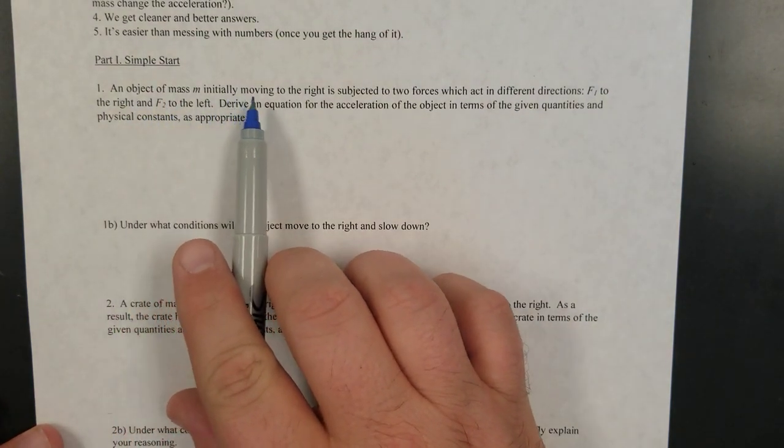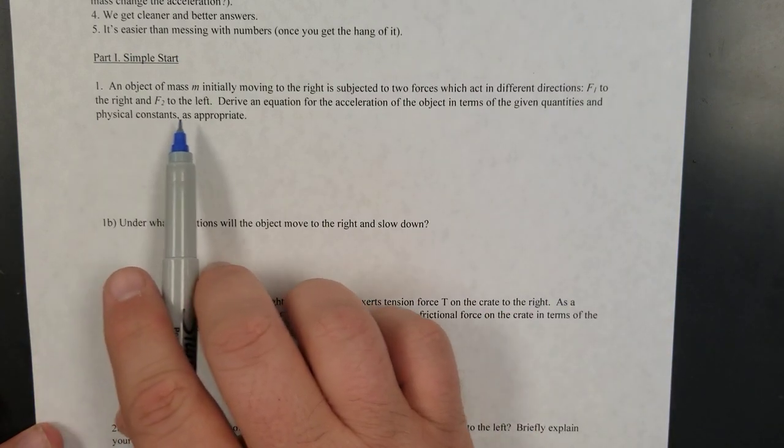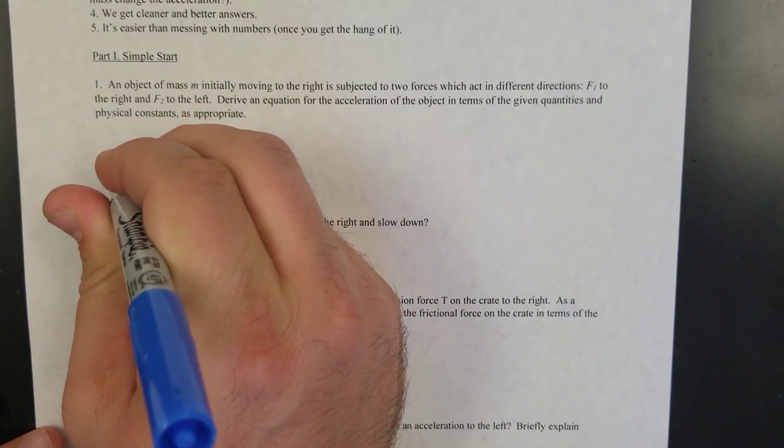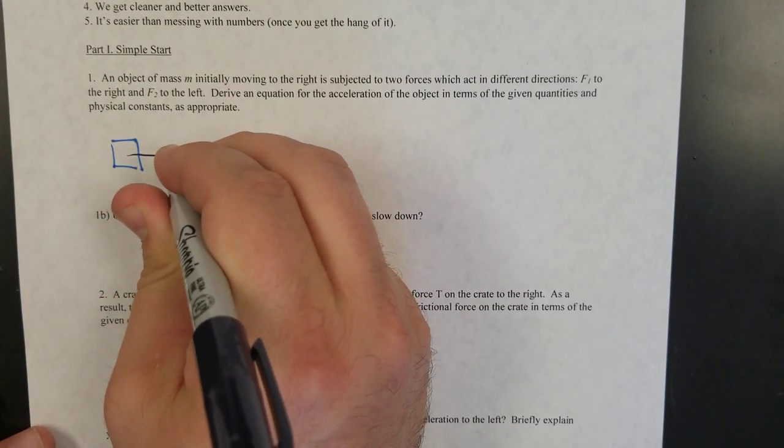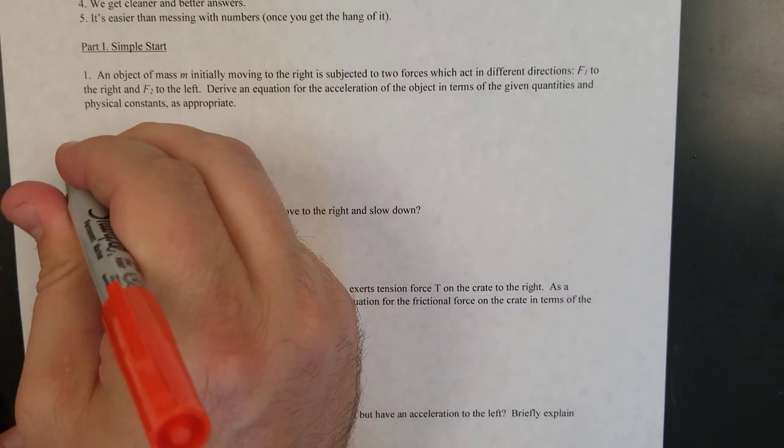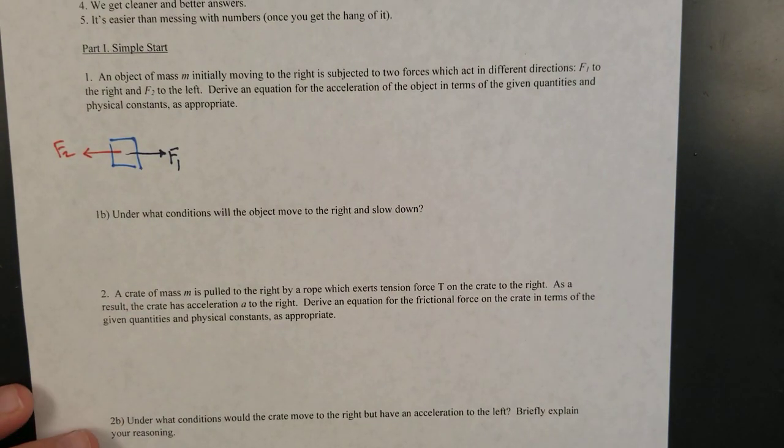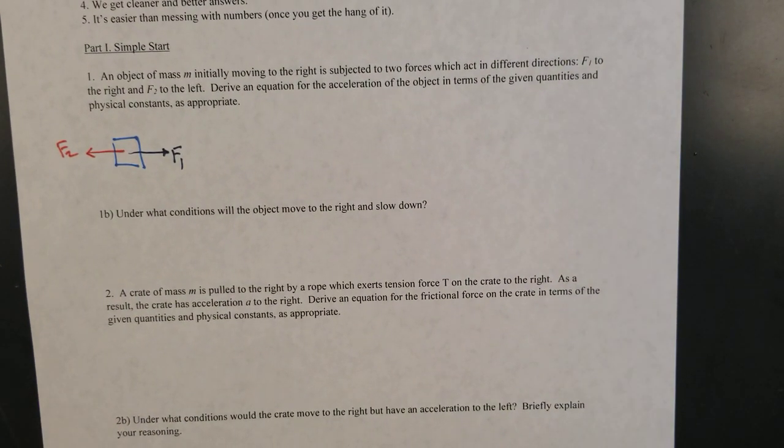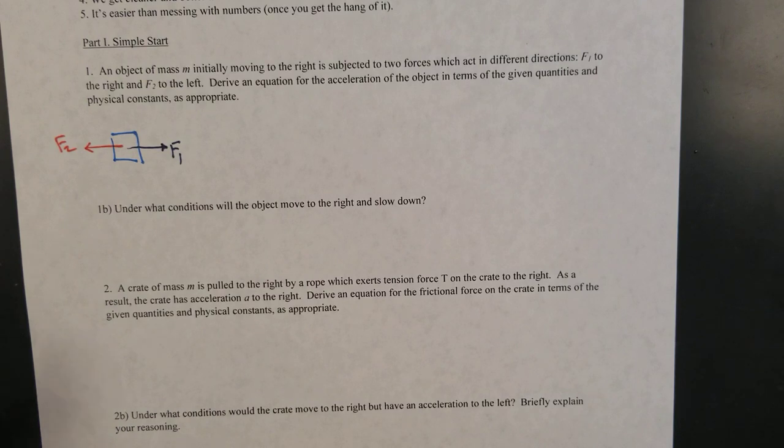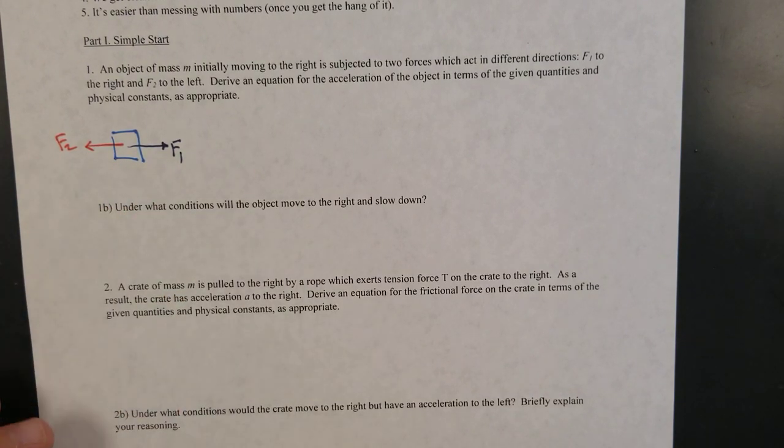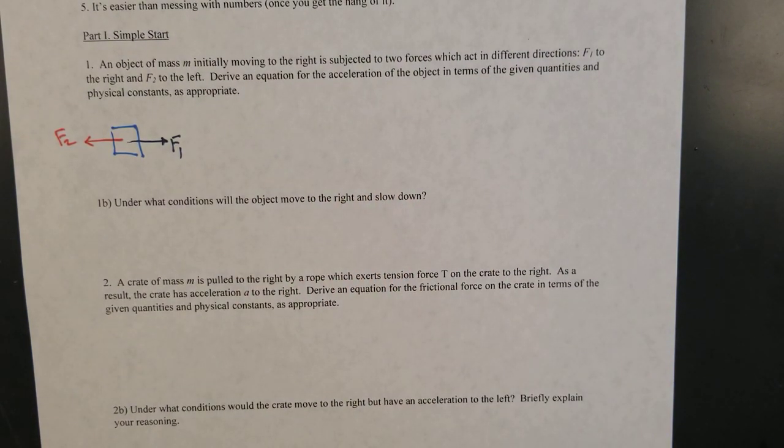In this example, we've got an object of mass m moving to the right, subjected to two forces which act in different directions, F1 to the right and F2 to the left. So real simple free body diagram. Here's my object. Here is F1. And then here is F2. Now, I don't know anything about how big these are. I don't have any numbers. That's kind of what we want to do is go, what situation will this be bigger than this? And what does that do? In situations where this is bigger than this, what does that mean? So derive an equation for the acceleration of the object in terms of the given quantities and physical constants as appropriate.